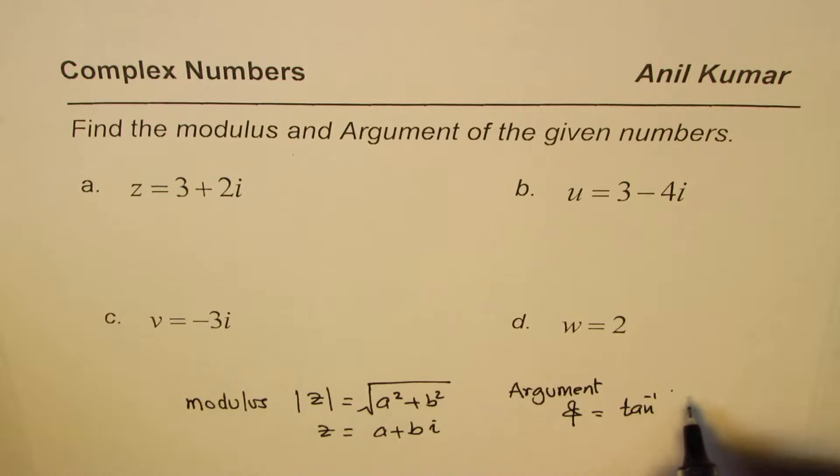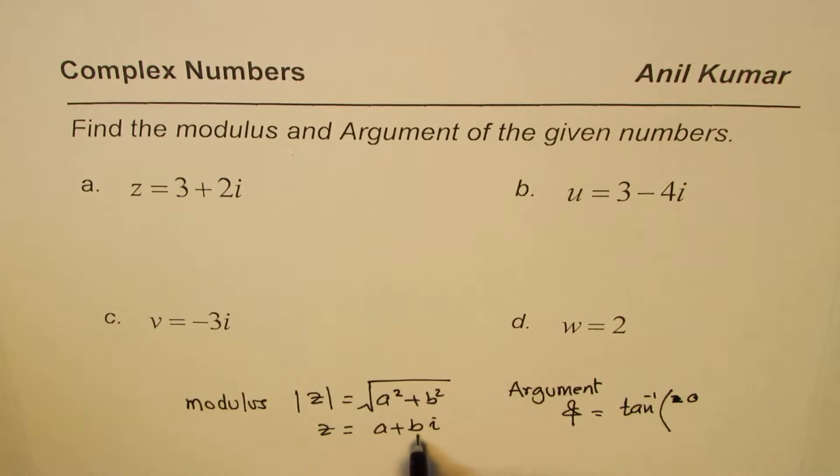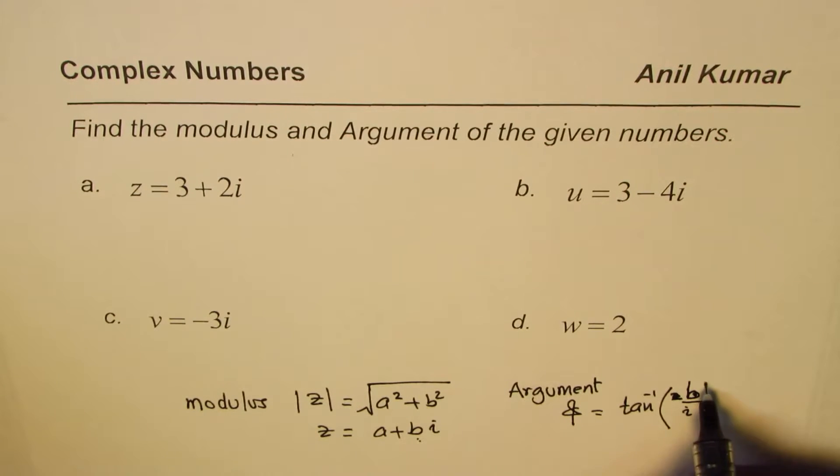Well, you could write tan inverse of the imaginary over real part. So let me write, I mean, b is the imaginary part, so b over i, correct?